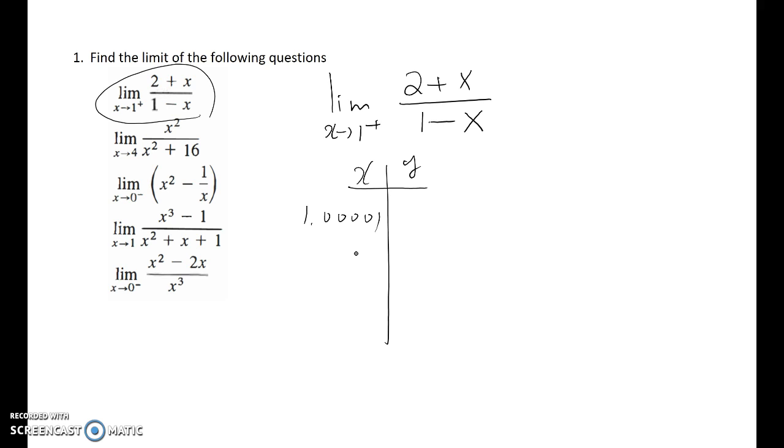I'm going to calculate two plus one point zero, zero, zero, one divided by one minus one point zero, zero, zero, one. Then you will get around negative three, zero, zero, zero, zero, zero, one.